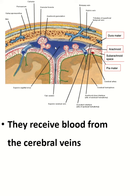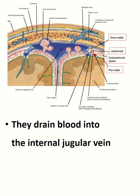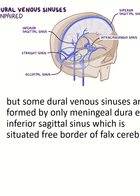Deoxygenated blood is received by the cerebral veins, and CSF is received by the arachnoid granulations. This blood is drained into the internal jugular vein. The major sinuses include the superior sagittal sinus (the largest sinus), the transverse sinus, the straight sinus, the sigmoid sinus, and the internal jugular vein.